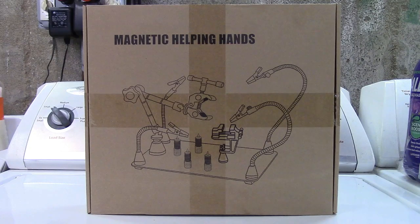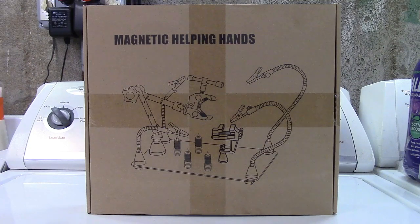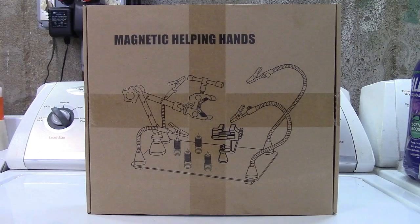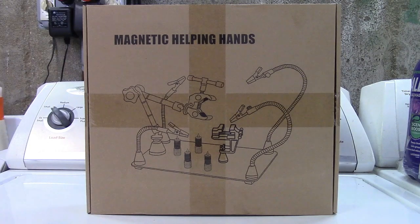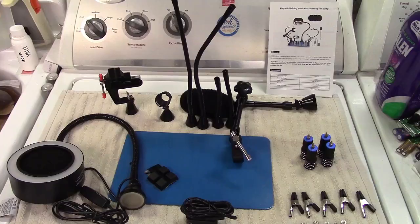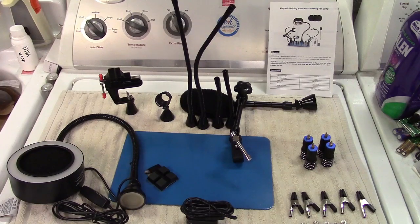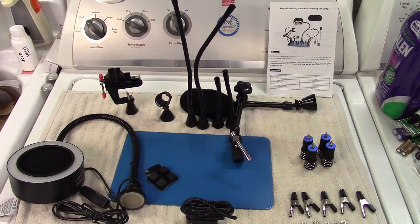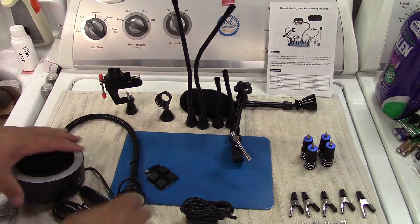This is the Tool Hour Magnetic Helping Hands Soldering Station with Fume Extractor. Let's take it out of the box. In the box you get a lot of stuff, but it's real easy. So we'll start from the beginning.